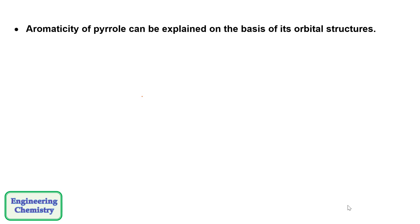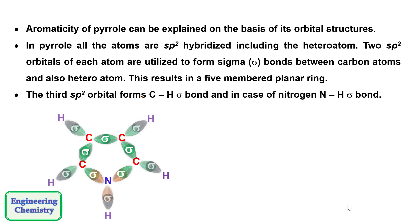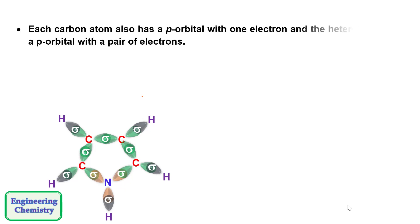This aromaticity of Pyrrole can be explained on the basis of its orbital structure. In Pyrrole, all atoms are sp2 hybridized — including the heteroatom — that is, all four carbon atoms and one nitrogen atom are sp2 hybridized. Two sp2 orbitals of each atom are utilized to form sigma bonds between the two carbon atoms on either side and also with the heteroatom. This results in a five-membered planar ring. The third sp2 orbital forms a sigma bond between carbon and hydrogen, and in the case of the nitrogen atom, between nitrogen and hydrogen.